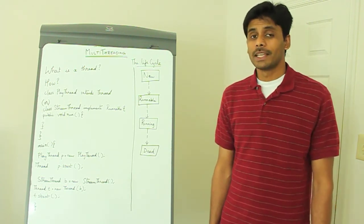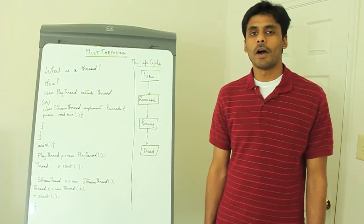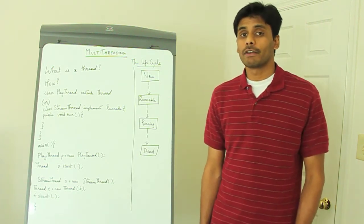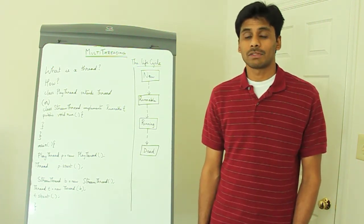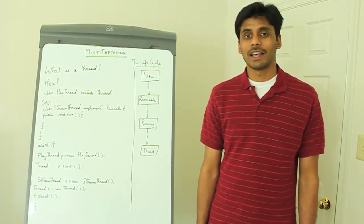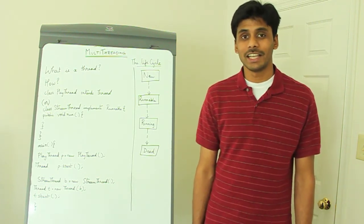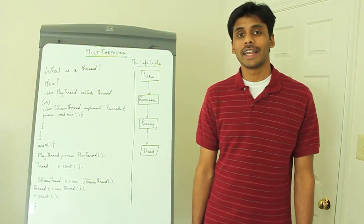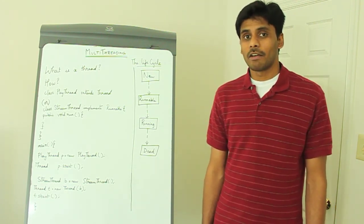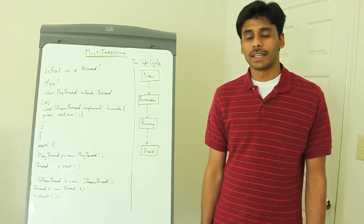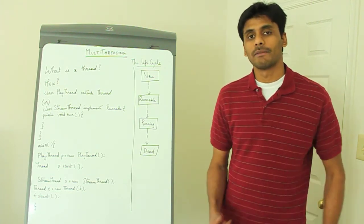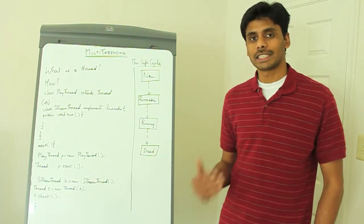A thread is a single sequential flow of execution. When you created your first Java class with the main method, you have already used a thread. The JVM — the Java Virtual Machine — creates a thread or a stack for the main method. That is, any other method calls you make from within the main method will go on to this stack.